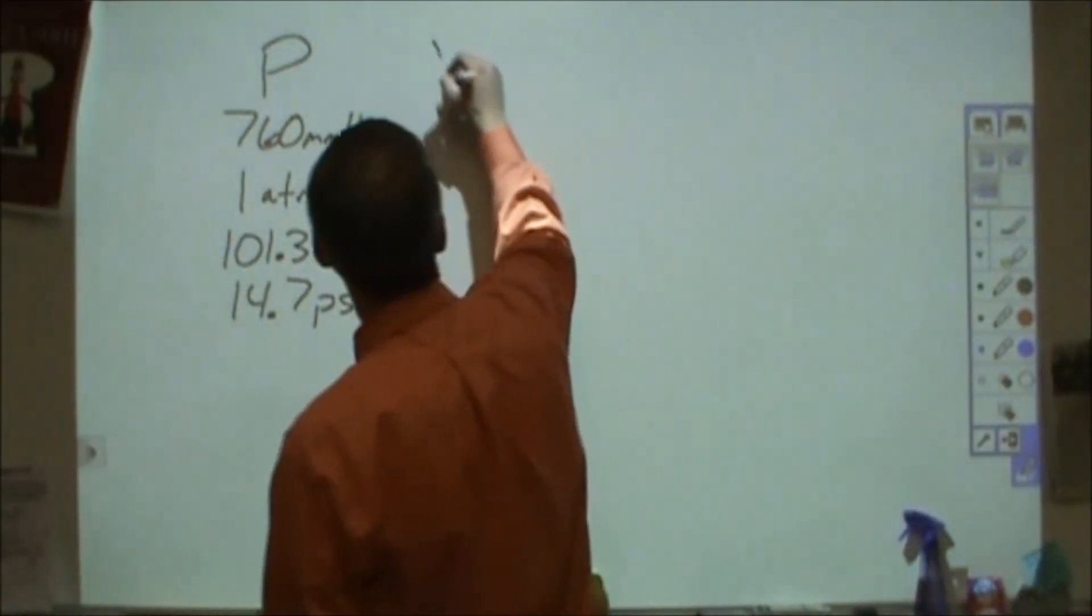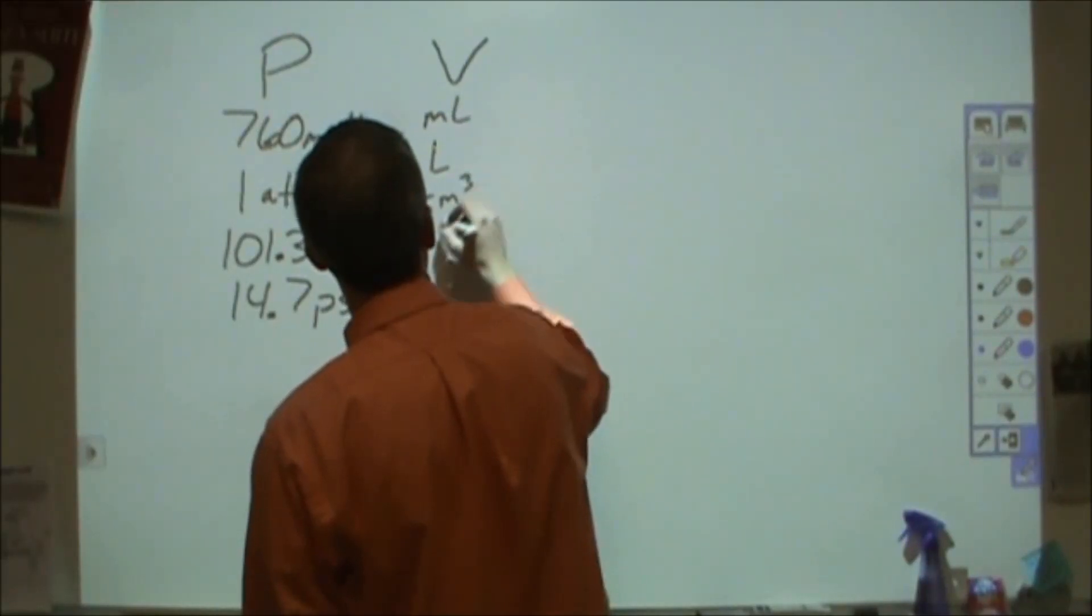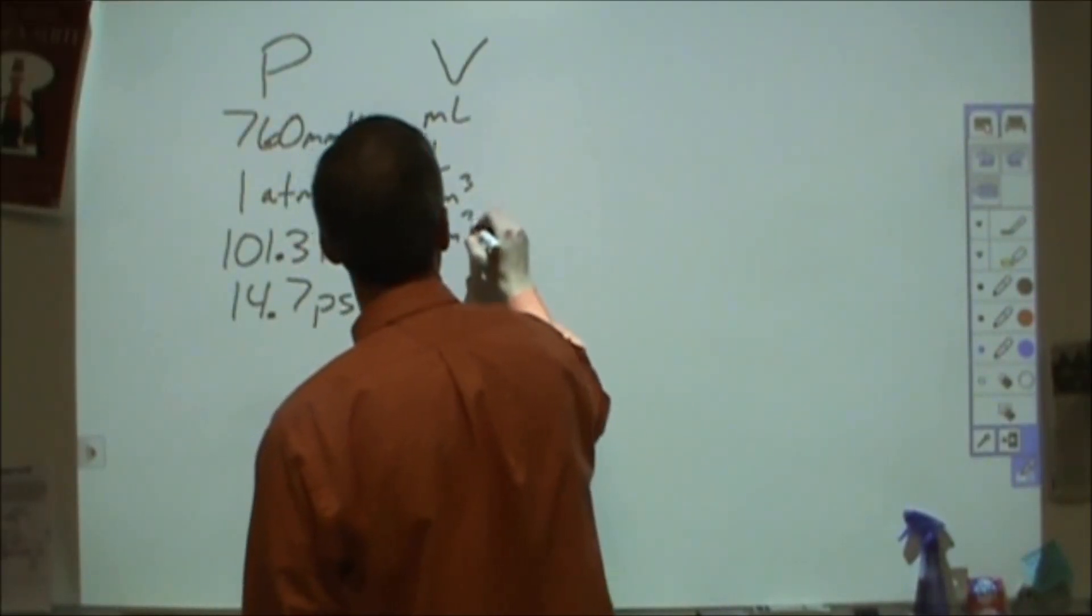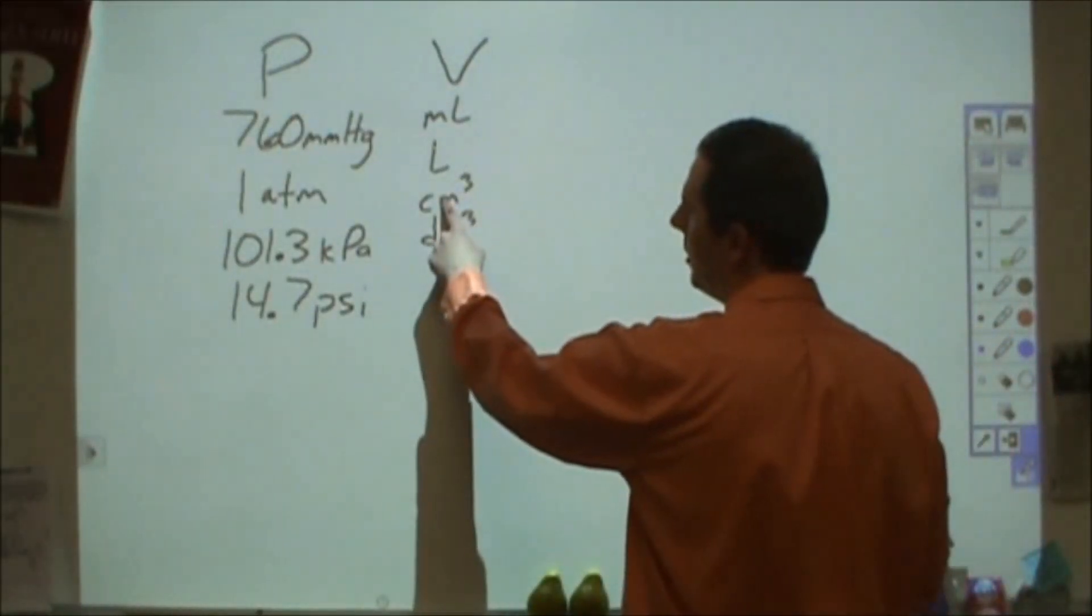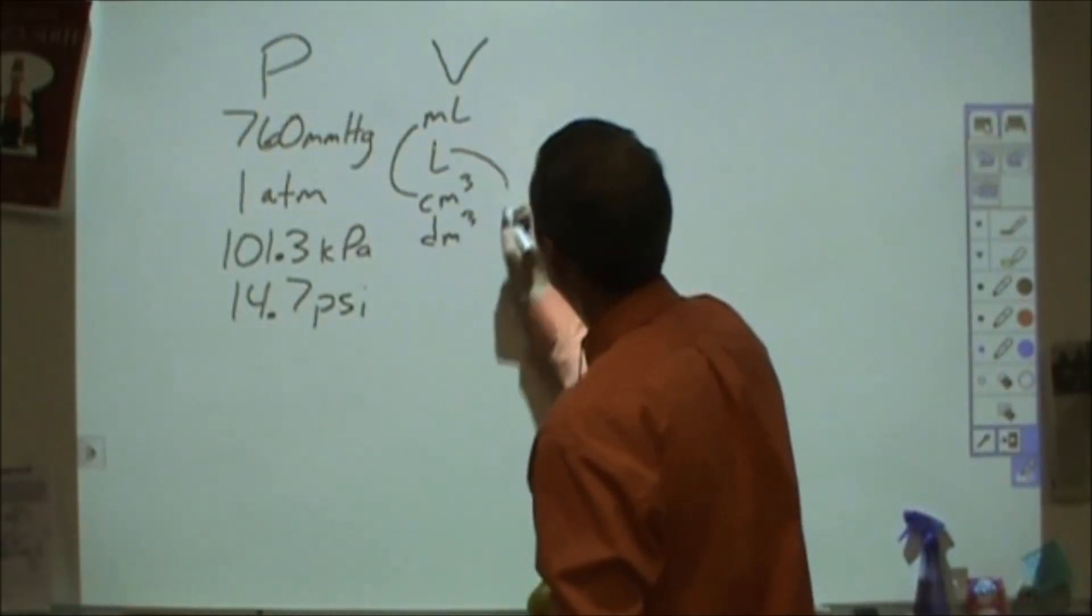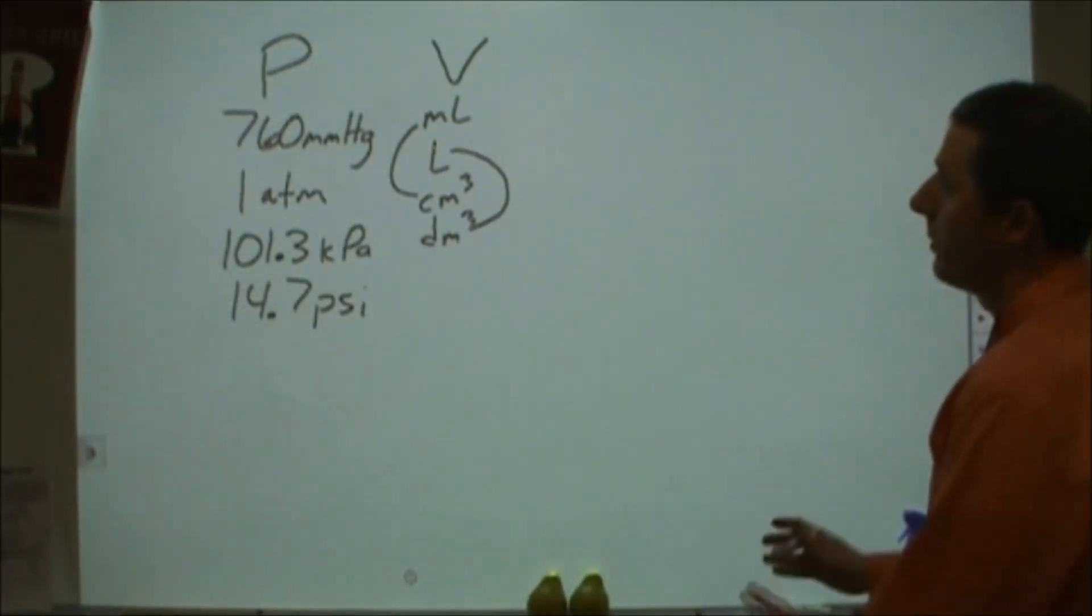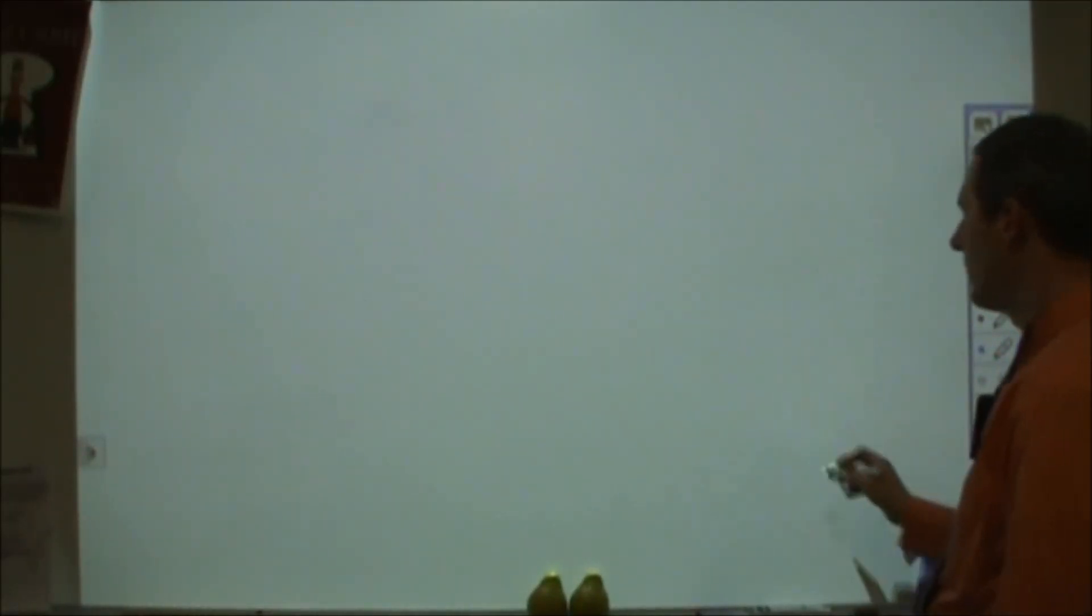You want to know your units for volume are going to be milliliters, or liters, or centimeters cubed, or decimeters cubed, or meters cubed. I would also add in that you probably should know that a centimeter cubed is equal to a milliliter, and that a decimeter cubed is equal to a liter. Temperature, you're going to be working in kelvin, so we don't really need to go through it, but do know how to convert something into kelvins.